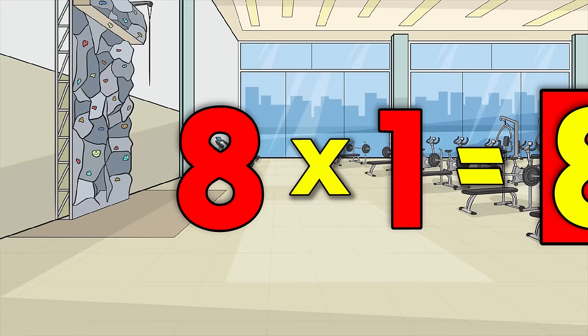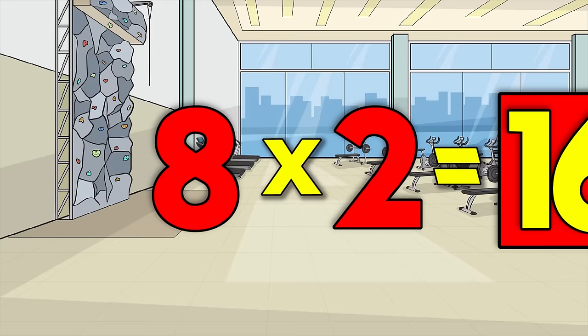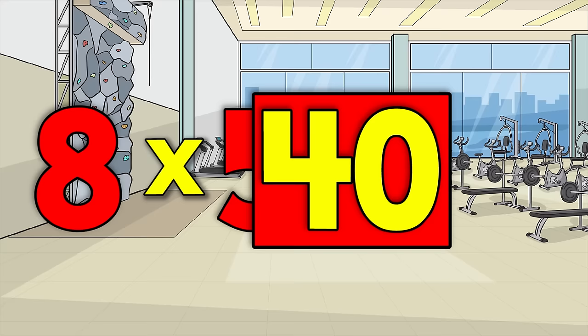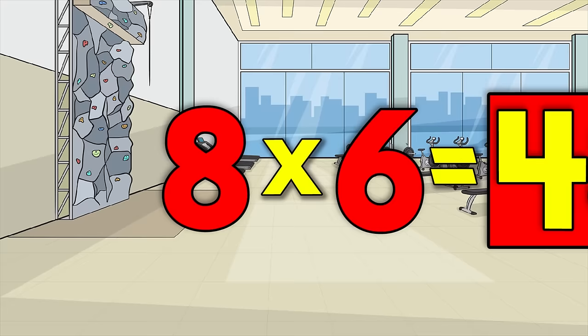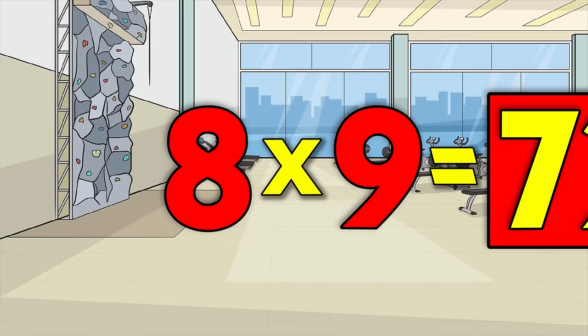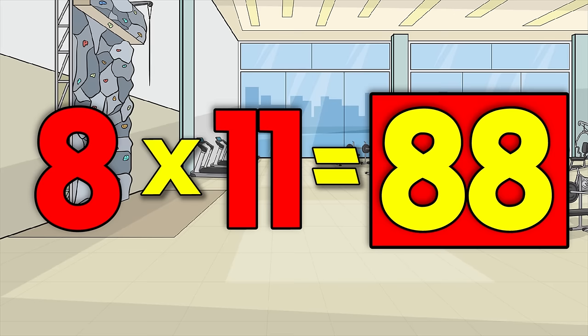Eight times two is sixteen. Eight times three is twenty-four. Eight times four is thirty-two. Eight times five is forty. Eight times six is forty-eight. Eight times seven is fifty-six. Eight times eight is sixty-four. Eight times nine is seventy-two. Eight times ten is eighty. Eight times eleven is eighty-eight. Eight times twelve is ninety-six.